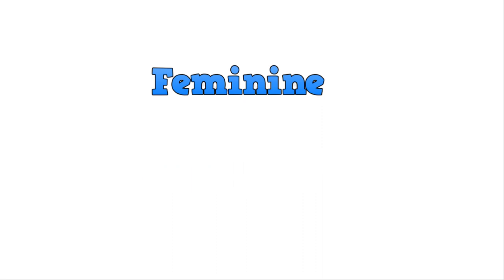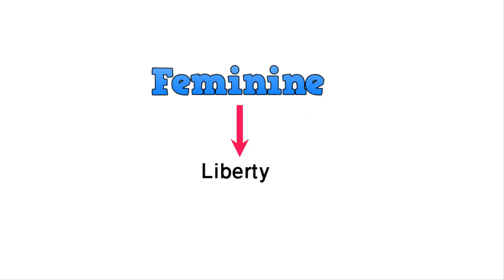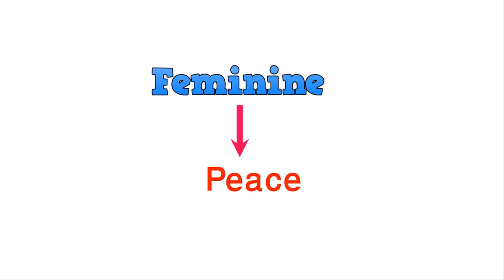Nature is beautiful, so we put 'nature' in the feminine gender category. Words like liberty, freedom, justice, mercy, peace, hope, and charity are all feminine gender. These words show beauty and positive things. Whatever shows positivity and beauty, we put it in the feminine gender category.